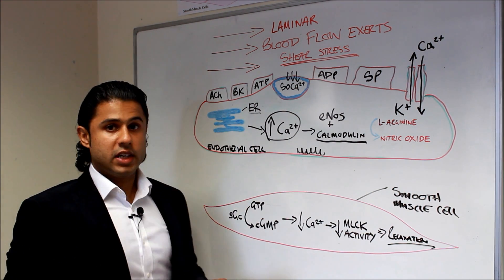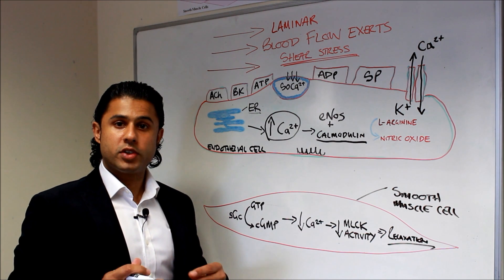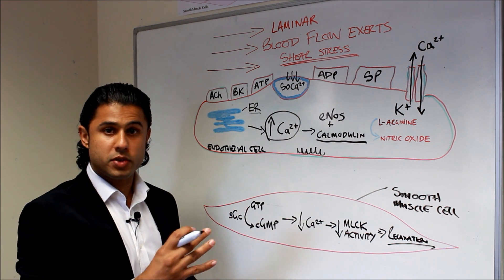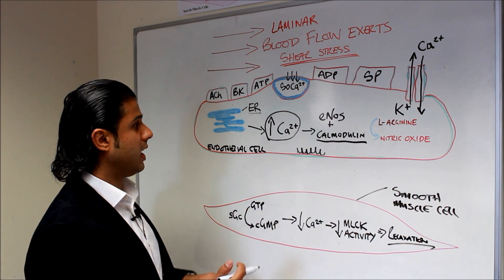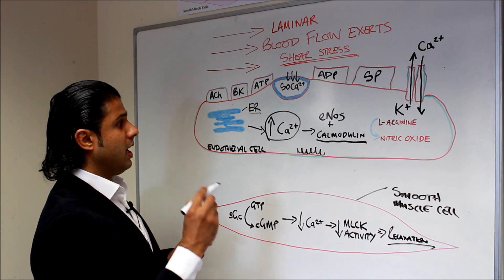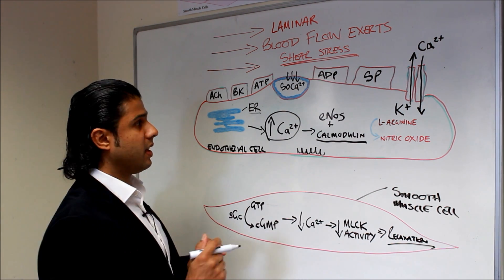When the endoplasmic reticulum runs out of calcium, which can happen when you want prolonged vasodilation, so if you have a continuous stimulus for the blood vessel or the coronary vessel to dilate, the endoplasmic reticulum may run out of calcium. And there's two things that can happen in that situation.